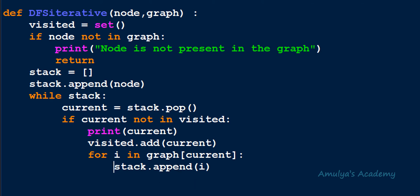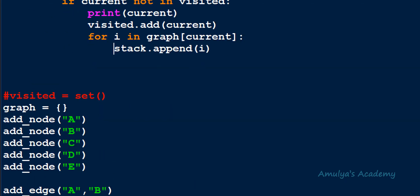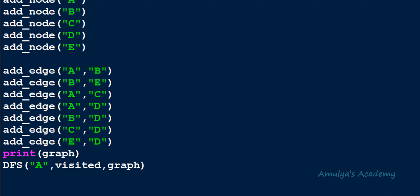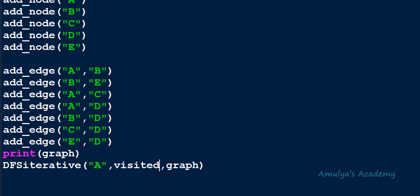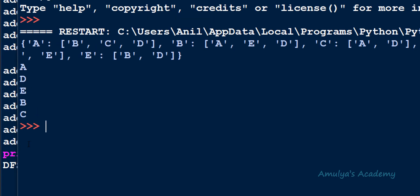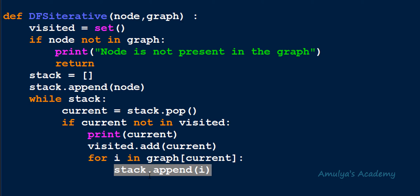Now the function is complete. I'll call 'DFS_iterative' with 'a' as the starting node. After executing, you can see the output: a, d, e, b, c. Note that the stack can contain duplicate values; if you want to avoid that, you can add a condition. If you have any doubts about how this function works, the next tutorial will walk through it with an example.